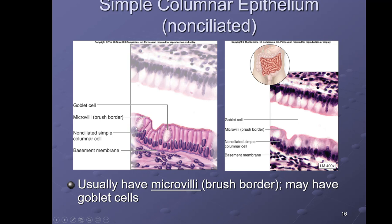Simple columnar epithelium — one layer of column-shaped cells, found mainly in the digestive tract. Other structures associated with this tissue include microvilli, which increase the surface area and form what we call a brush border found in the digestive tract. Large cells called goblet cells are commonly found in simple columnar epithelium and secrete mucus.